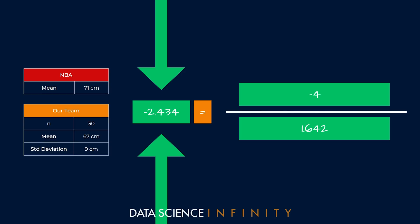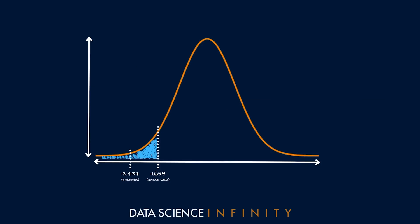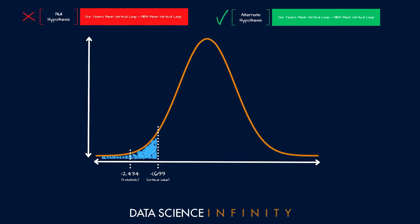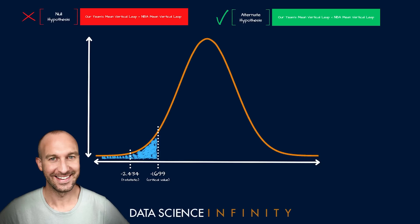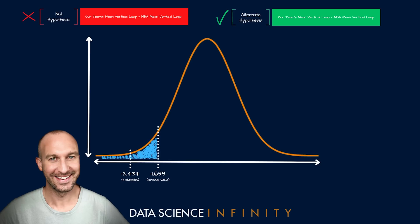Heading back to our distribution, this t-statistic of negative 2.434 falls outside our critical value of negative 1.699. Because of this, we reject the null hypothesis — we reject the notion that the mean vertical leaps of the two groups are actually the same. In doing this, we lend our belief more toward the idea that the mean vertical leap for our team is significantly lower than that of the entire NBA. As coach, we are thrilled to have successfully applied the one sample t-test, even if we are less thrilled about our players' jumping abilities. This result is still powerful — it gives us confidence about what to do next and justifies whatever decision we make to remedy this. And that is why this is such a powerful concept in business too: it helps justify our decisions and provides confidence to stakeholders around the actions we take.